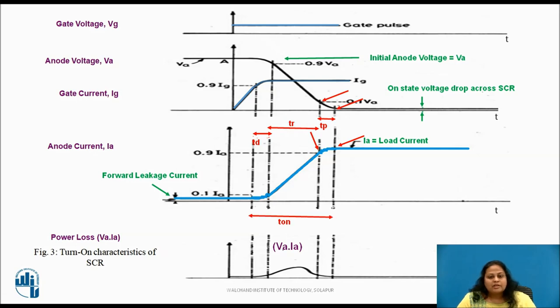Thus, the total turn-on time T on is the sum of delay time, rise time and spread time. This is typically of the order of 1 to 4 microseconds and depends upon the anode circuit parameters and the gate signal waveform. The width of the firing pulse should therefore be more than 10 microseconds, preferably in the range of 20 to 100 microseconds. The amplitude of the gate pulse should be 3 to 5 times the minimum gate current required to trigger the SCR.